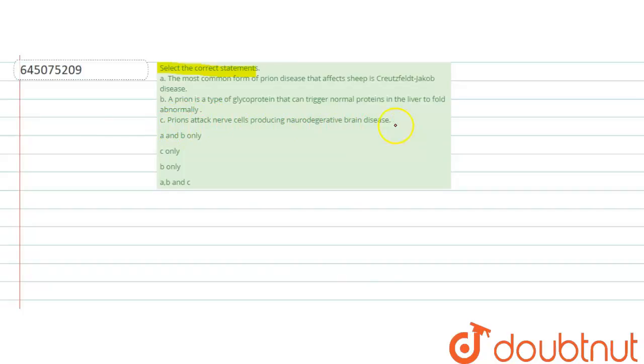And the third statement says prion attacks nerve cells producing neurodegenerative brain disease. We are having four options: option one says A and B only, option two says C only, option three says B only, and the last option says A, B, and C. Eventually, we have to find the correct statement.